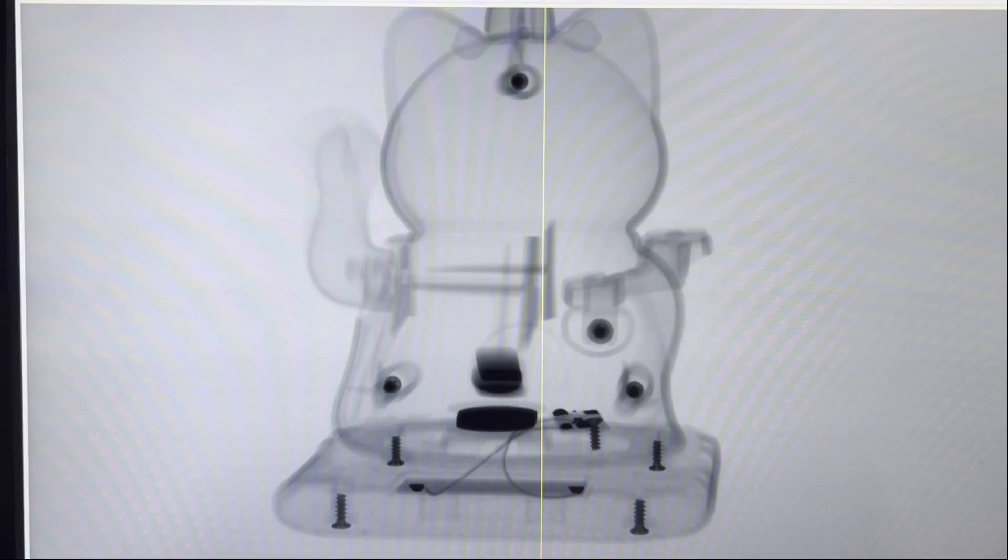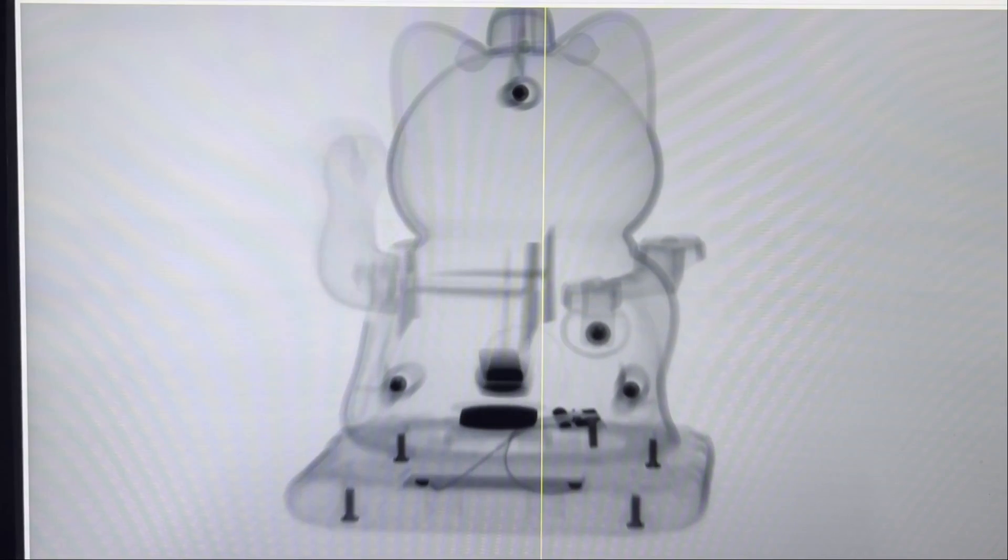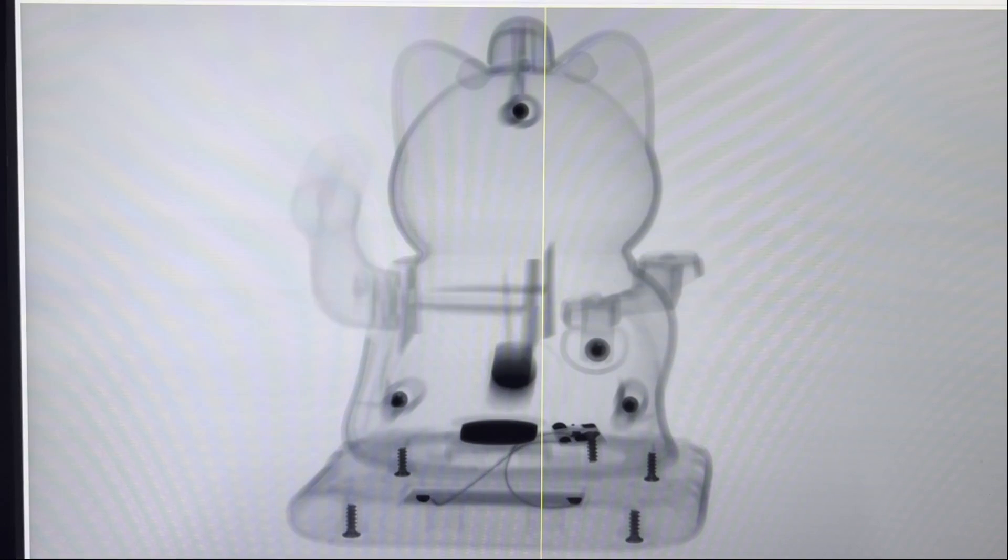Luckily we can get a radiograph of the cat while it waves because the time resolution of the radiograph is good enough. We wouldn't be able to get the full tomography though because it won't stop moving.